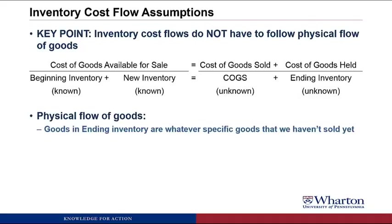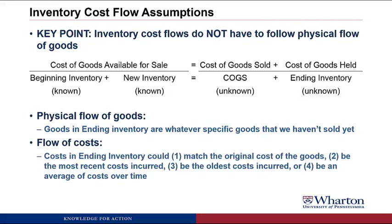If you think of the physical flow of goods, the goods in ending inventory are whatever specific goods we haven't sold yet, and they're probably the newest goods. So if we were buying and selling bananas, what we would do is sell the oldest bananas first — those would go into cost of goods sold — and keep the newest bananas in ending inventory. But for the flow of costs, which are what we're actually running through all the T-accounts and journal entries, the cost in ending inventory could match the original cost, the most recent cost, the oldest cost, or an average of cost over time.